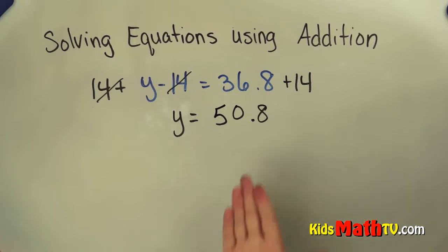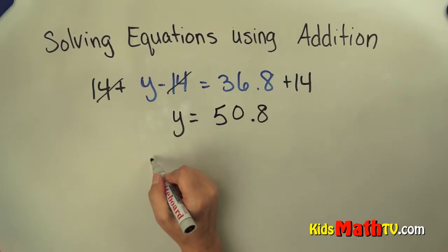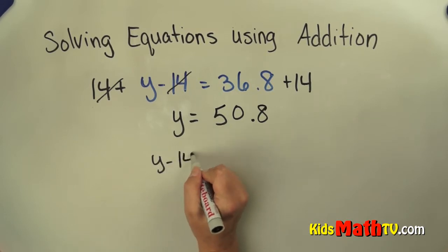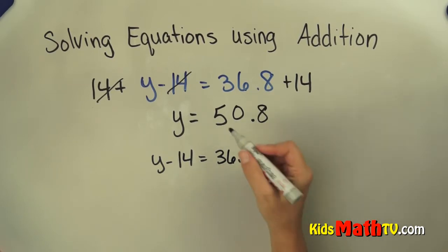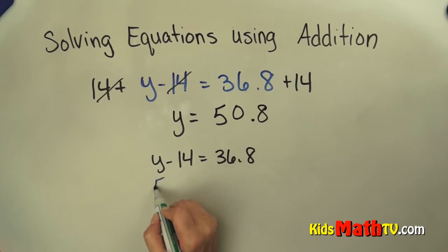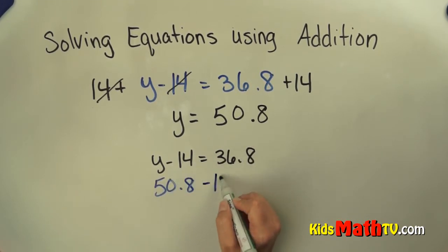If I want to check my equation I can simply start with my original equation. y minus 14 should equal 36 and 8 tenths. I can substitute the y in, so this would be 50 and 8 tenths subtract 14.